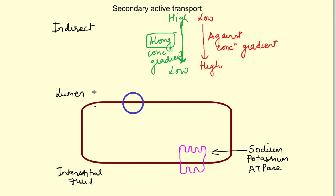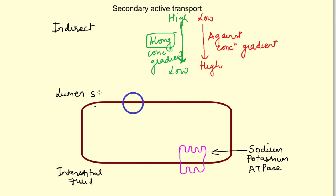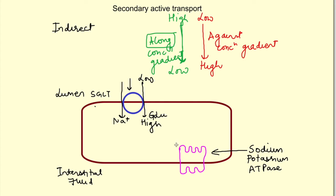This is the cell and this is the transporter: sodium-glucose transporter. This transporter transports sodium ions along their concentration gradient — that is, from outside to inside — while it transports glucose against its concentration gradient, but again from outside to inside. So here you see the difference: sodium is moving outside to inside, whereas in primary active transport it was moving from inside to outside.